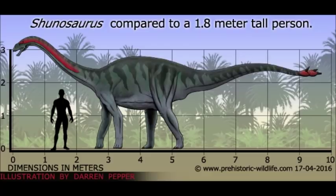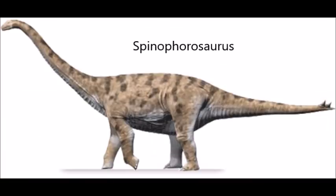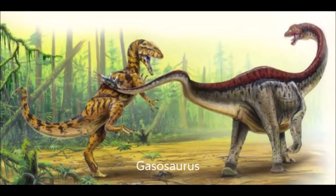Beyond that is the Eusauropoda — the true sauropods. One of the most basal eusauropods is the bizarre Shunosaurus from early Jurassic China. What makes this sauropod so strange is its tail club, a feature that we normally associate with the ornithischian ankylosaurs. It was not alone in this feature — Spinophorosaurus from middle Jurassic Niger similarly has spiked osteoderms on its tail. The likely explanation for these tails is that they provide a defense against predators, giving a hint as to how dangerous the predatory dinosaurs had become at this point. In the case of Shunosaurus, the tetanuran theropod Gasosaurus was a common predator.